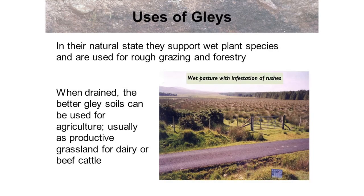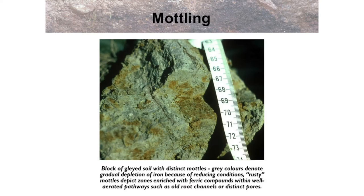The picture shows a wet pasture with rushes. When drained, the better gley soils can be used for agriculture, usually productive grassland for dairy or beef production. Another picture shows mottling in a block of grey gley soil. The grey colours denote gradual depletion of iron due to reducing conditions. The rusty orange-coloured mottles depict zones enriched with ferric compounds within well-aerated pathways such as old root channels or distinct pores, sometimes formed by root penetration deeper into the soil.